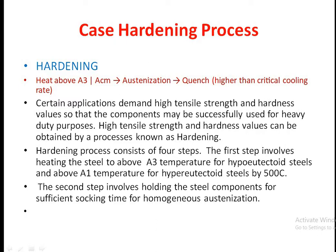The hardening process consists of four steps. The first step involves heating the steel above the A3 temperature for hypo-eutectoid steels and above the A1 temperature for hyper-eutectoid steels, by approximately 50 degrees Celsius — that is, A3 plus 50 or Acm plus 50.